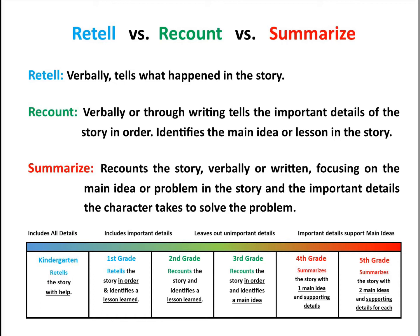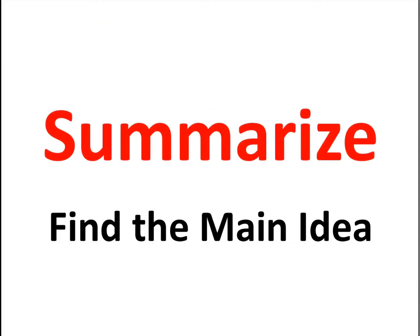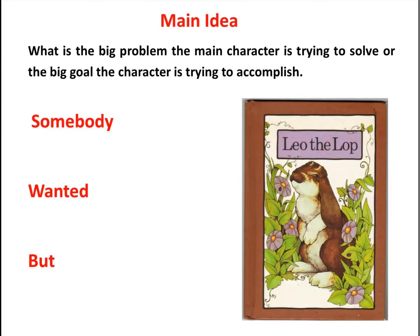So now let's look at what is the main idea of a story. To summarize a story, we want to find the main idea. The main idea is the big problem the main character is trying to solve, or the goal the character is trying to accomplish in the whole story. To do that, we're going to find three things. There's the somebody — that's the main character — and you're going to notice who they are and their traits: their positive trait and their negative trait. These are going to be important to understanding the character's problem.